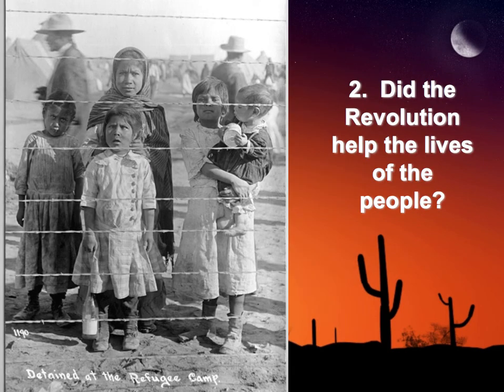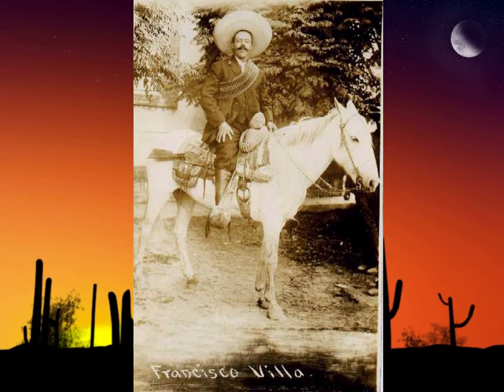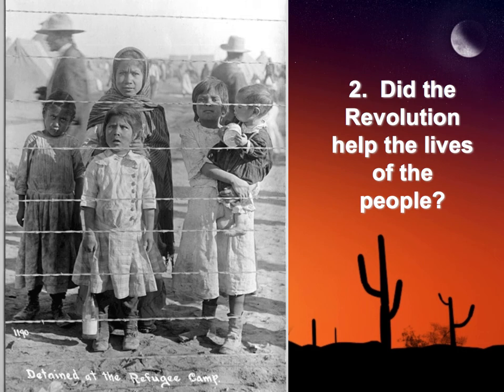This brings up the question: did the revolution really help the lives of the people? Zapata tried to be the man of the people. You also had Pancho Villa, centered in the north, who was also a very charismatic figure seen as a man of the people.